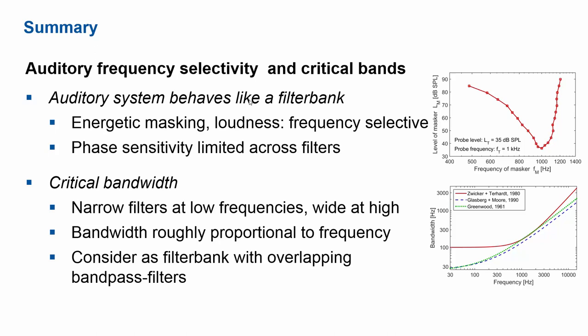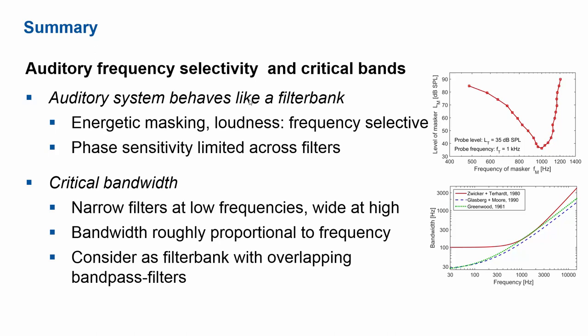The critical bandwidth can be determined from a range of experiments — from loudness to masking experiments — and we find critical band filters that are narrow in absolute terms at low frequencies and fairly wide at high frequencies. The bandwidth, at least above about 500 Hz, is roughly proportional to the center frequency, so it increases with center frequency. Using this knowledge, we can consider the auditory system as a filter bank with overlapping bandpass filters as wide as one critical band. Thank you for your interest in this lecture; the next lecture will consider loudness, where the critical band concept is of fundamental importance.